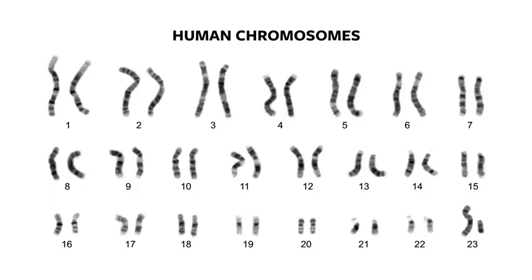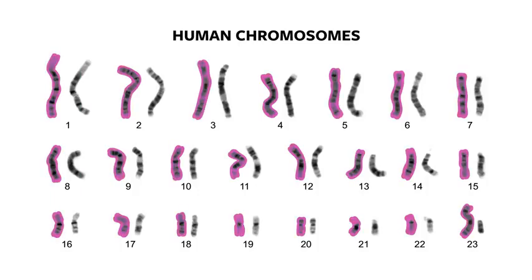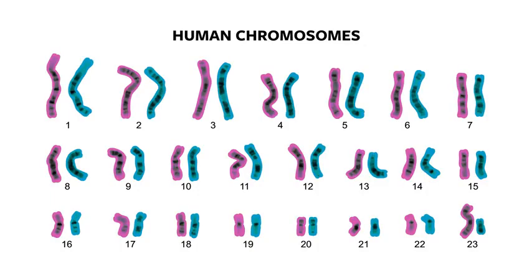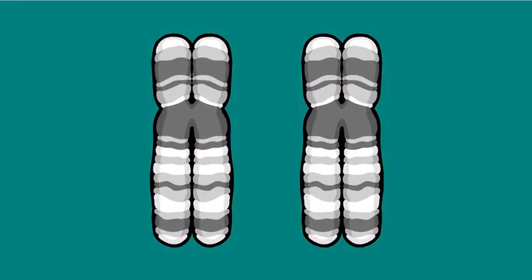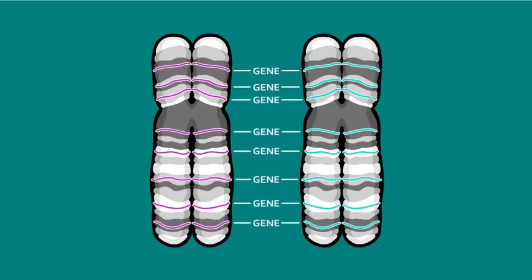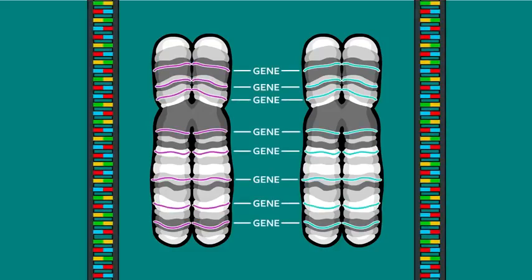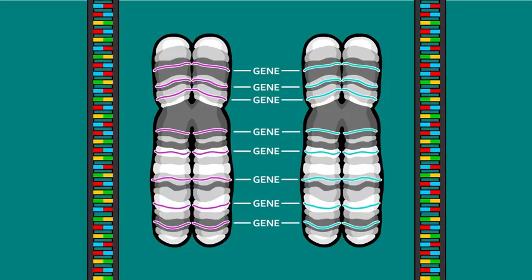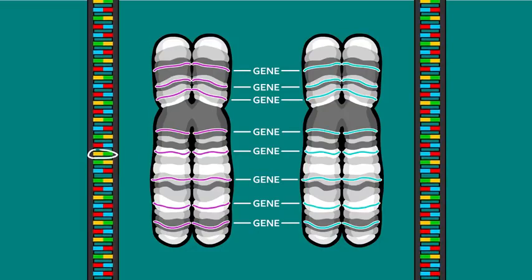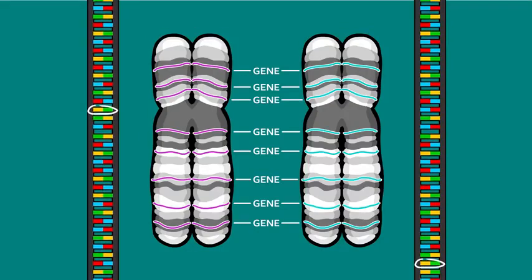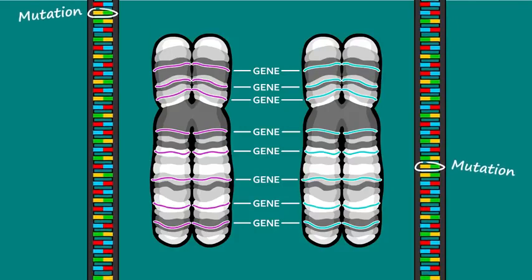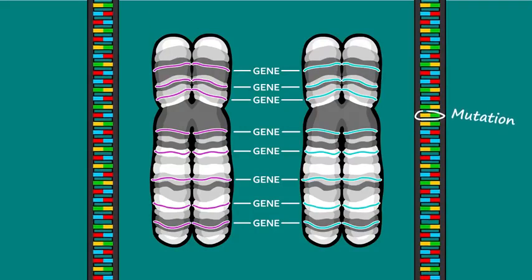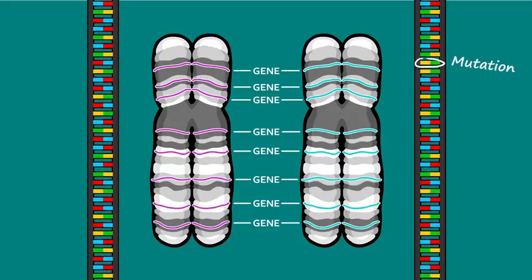One member of each pair of your chromosomes came from your mother; the other came from your father. If you were to examine the two individuals of a pair, you'd find that for the most part, both contain the exact same genes in the exact same locations. If you were to zoom into the actual genetic code, however, you would find slight sequence variations between them — these are the results of mutations. Most of these mutations happened long ago, and have been passed down from parent to child for many generations.